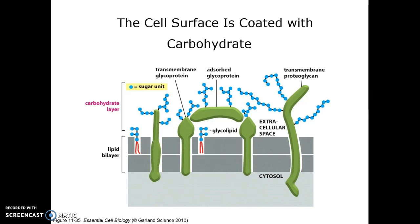These sugars are attached to proteins as well as to lipids, giving us glycolipids and glycoproteins. They have complex sugars that help identify the protein, target it to the correct membrane, and tell the body that this cell is not a foreigner — it's part of my own body, so I don't need to attack it.